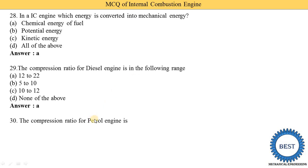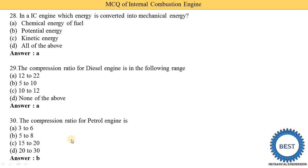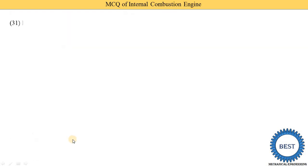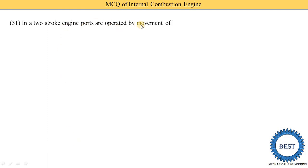Next MCQ: the compression ratio for a petrol engine is — option A: 3 to 6, option B: 5 to 8, option C: 15 to 20, option D: 20 to 30. The correct answer is option B — the compression ratio for a petrol engine is 5 to 8.